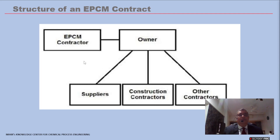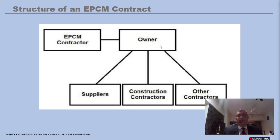In the EPCM model, the owner is responsible for placing orders on all suppliers and construction contractors, while the EPCM contractor acts as the owner's right-hand man. The risk to the EPCM contractor is much lower — only man-hours are at stake. If the owner wants to change the P&IDs, a change order can be raised for man-hours and effort, but the cost is borne directly by the owner. This means some degree of gold plating and changes can be accepted by the EPCM contractor, unlike in an EPC arrangement.